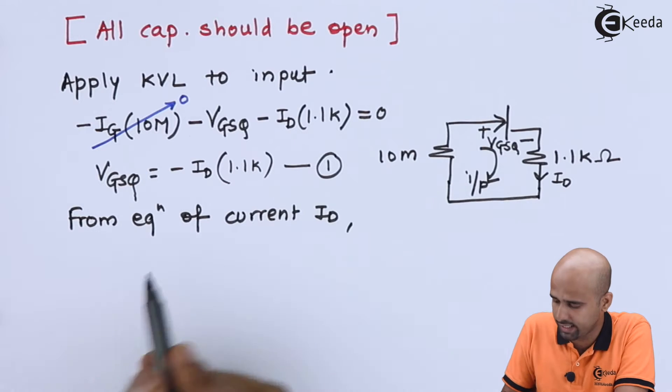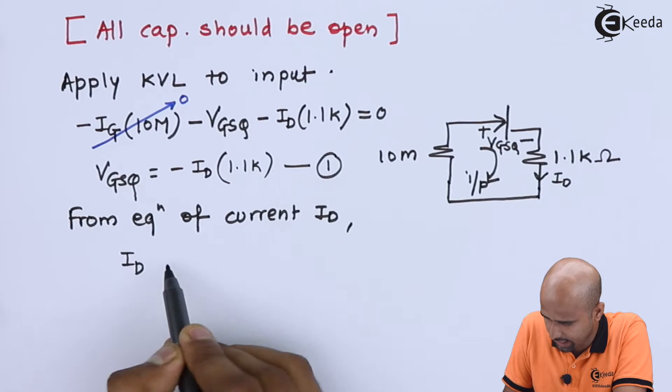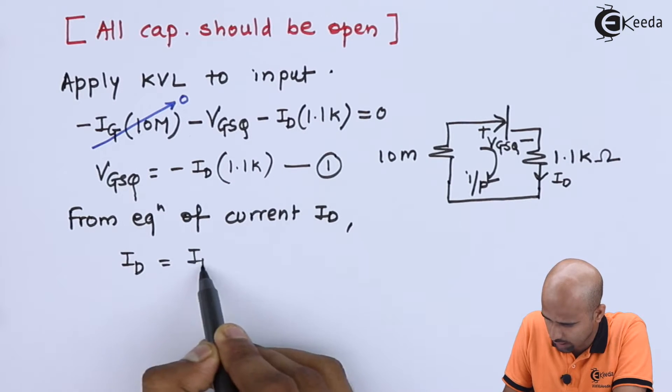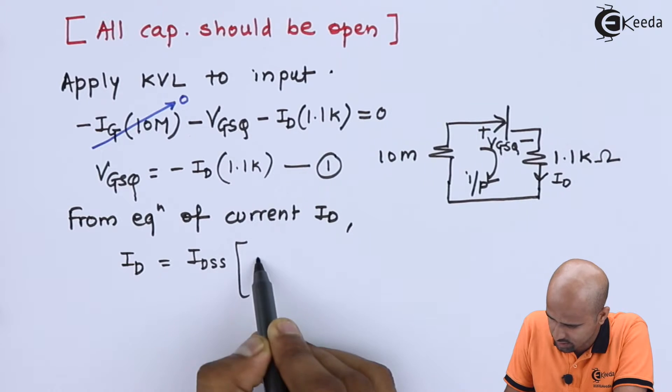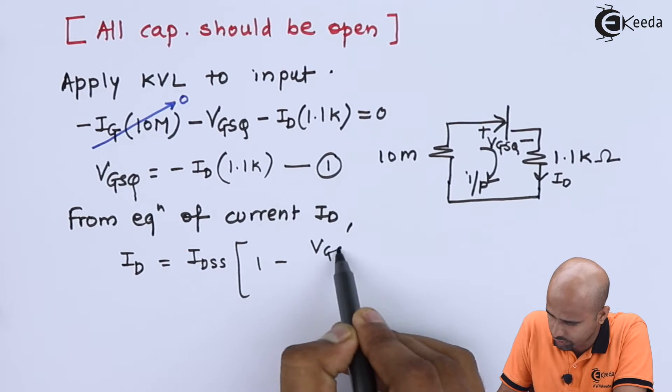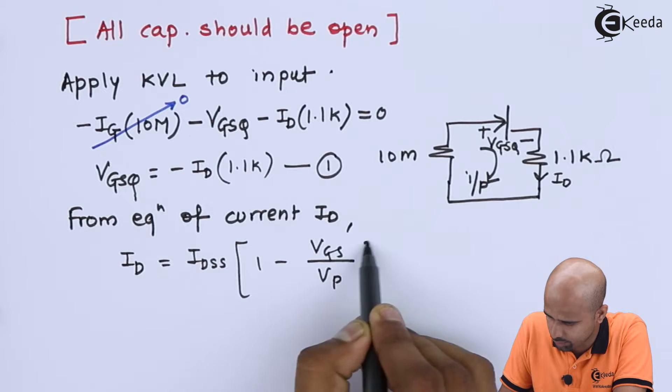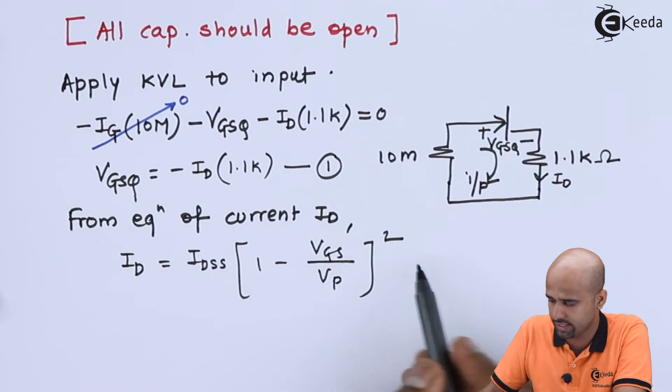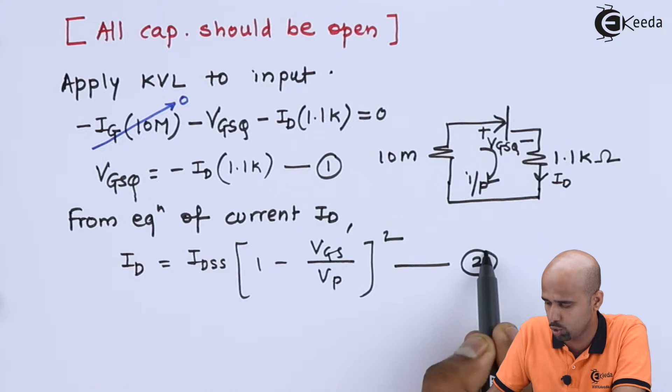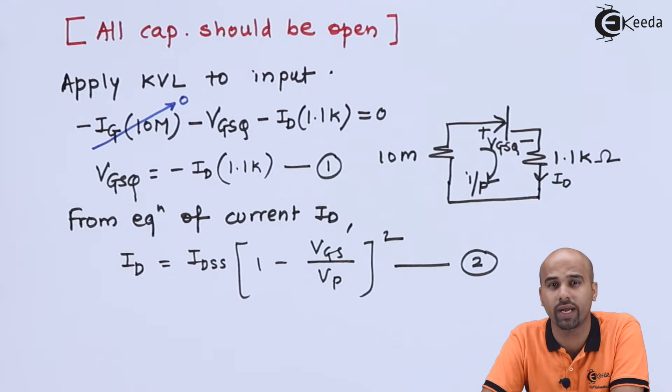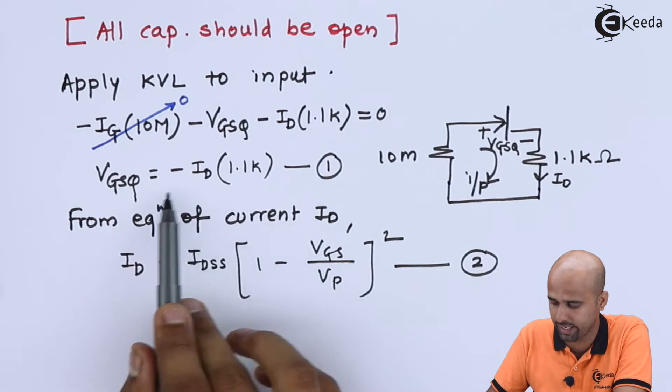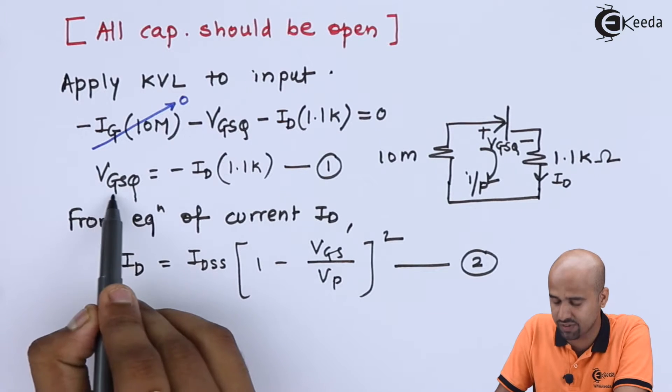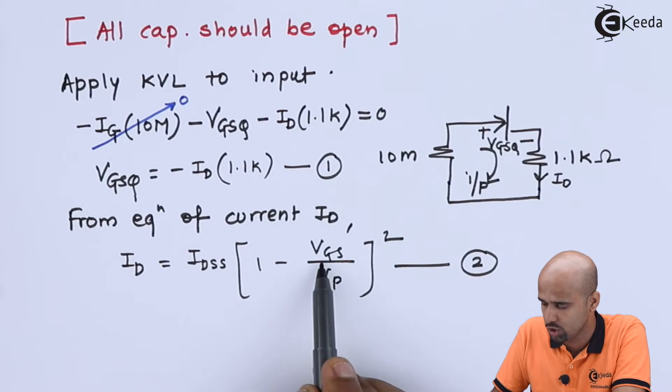From equation of current ID, we can write this as ID is equal to IDSS times [1 minus VGS divided by VP] the whole square. If you put this value, this is equation number 2. Put 1 in 2, we will be getting the value. It is as VGS only.